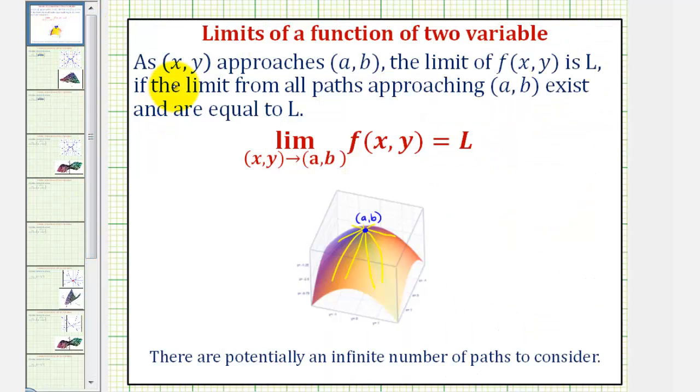For a quick review, as (x, y) approaches the point (a, b), the limit of f(x, y) is the value L if the limit from all paths approaching the point (a, b) exist and are equal to L. So let's assume the graph of this surface here is our function f(x, y).